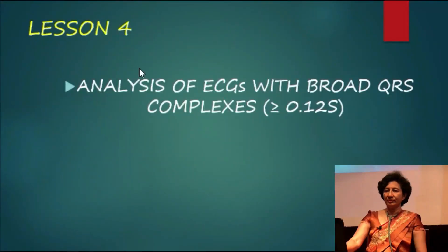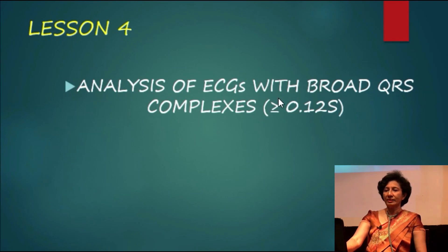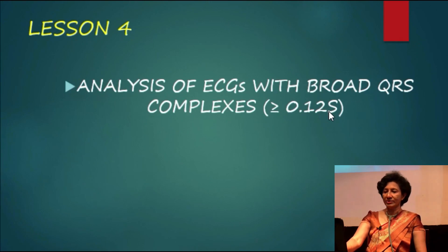Lesson 4: Analysis of ECGs with broad QRS complexes — that means QRS duration more than or equal to 0.12 seconds, or three small squares.